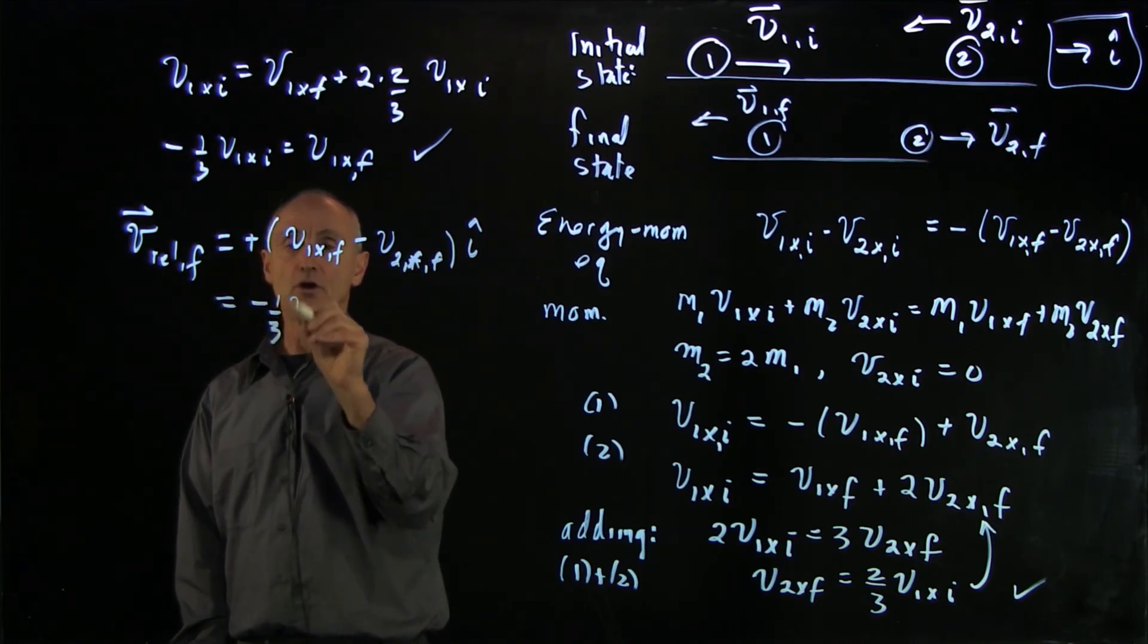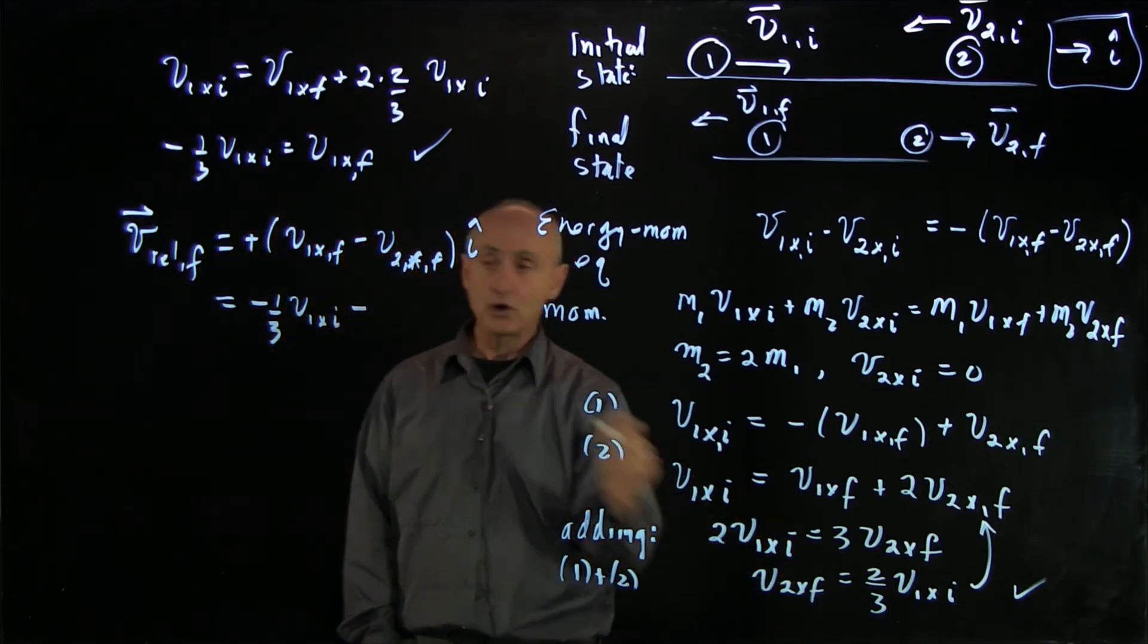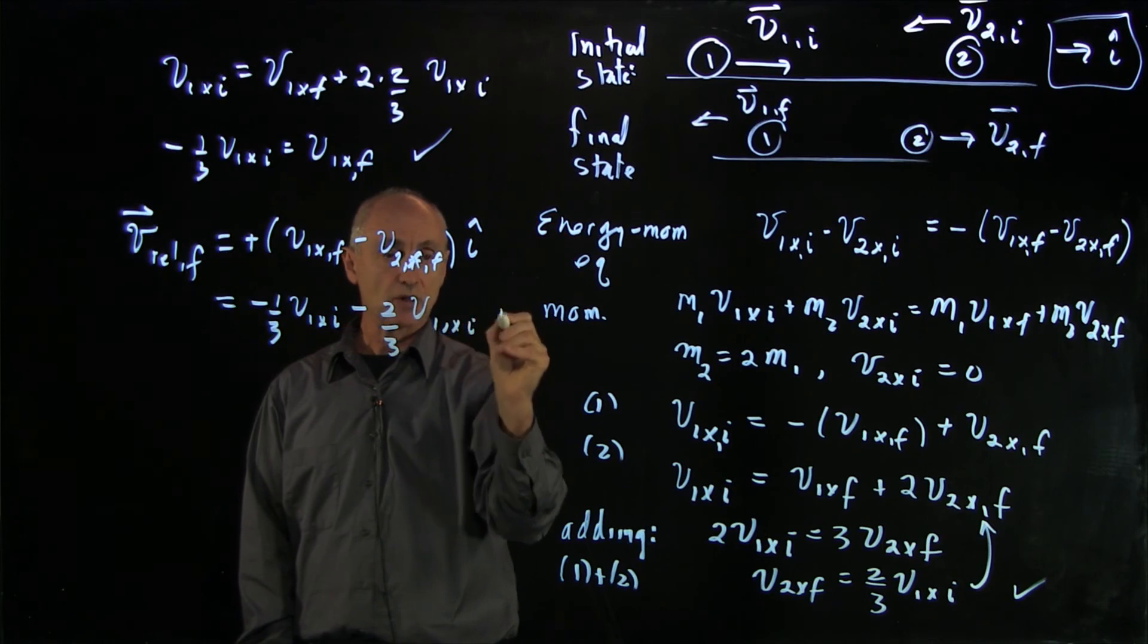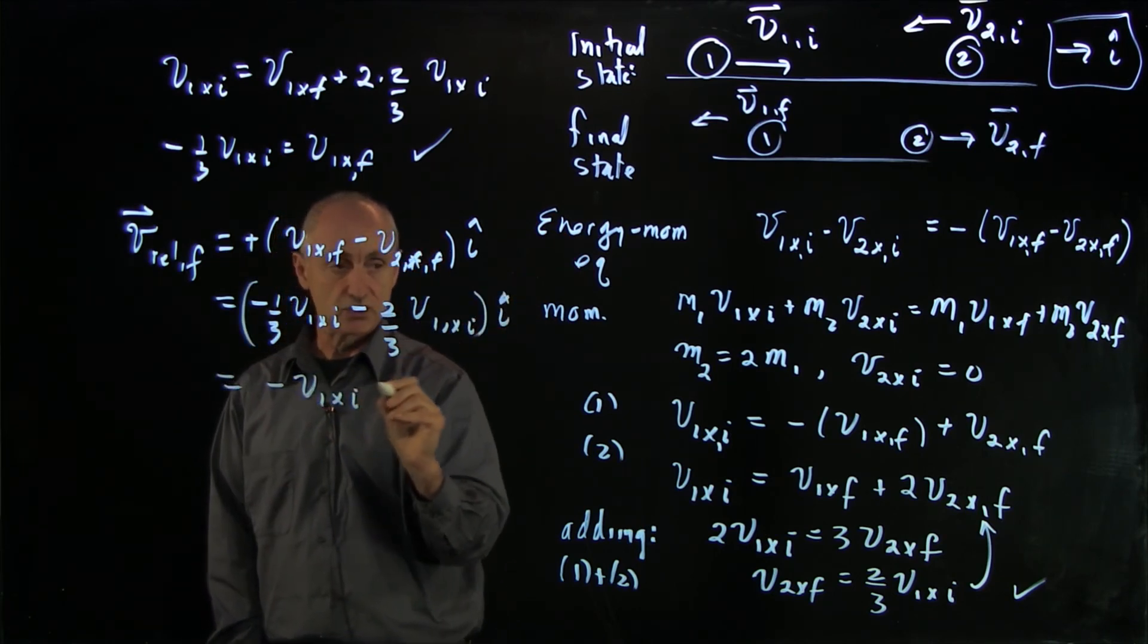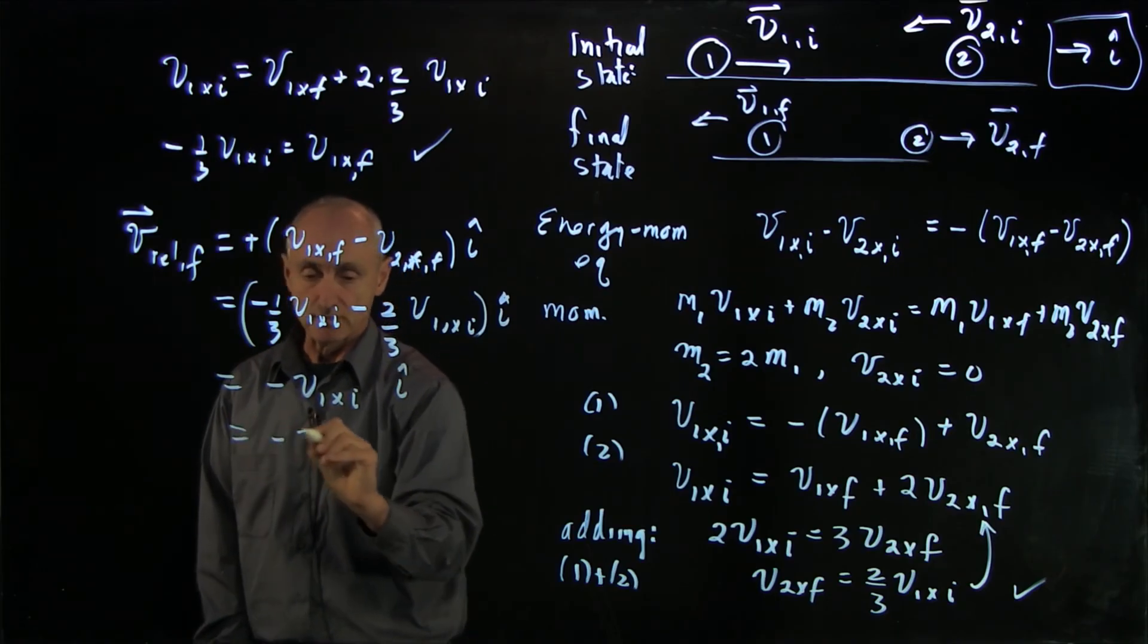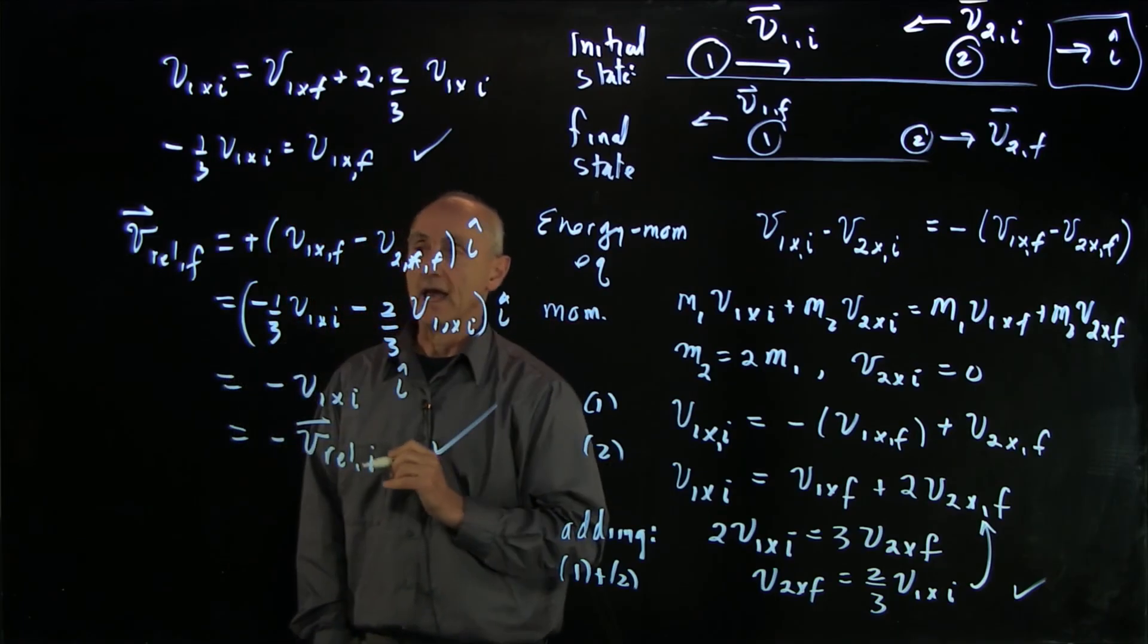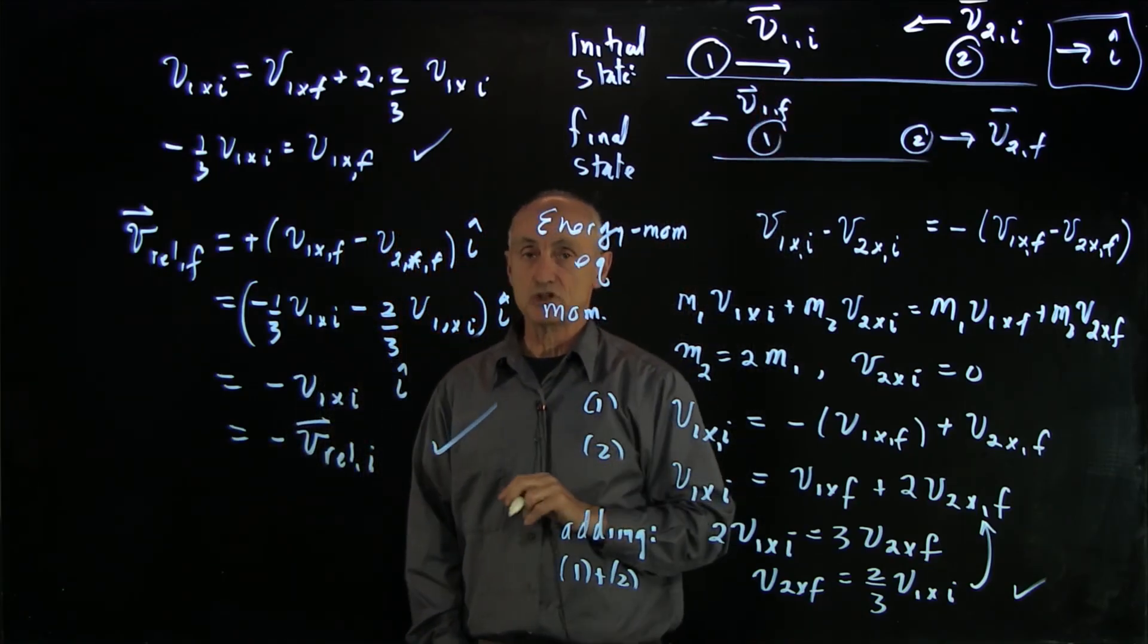And when we put that in, we have minus 1 third v1 x initial minus 2 thirds v1 x initial i hat. And we have minus v1 x initial i hat, which is minus the relative initial. And so we see that the relative velocity simply changed direction.